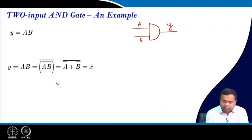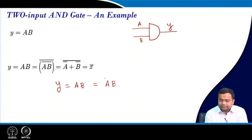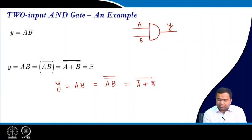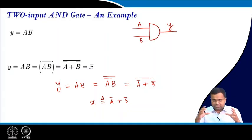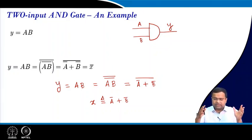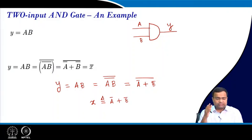In CMOS implementation, if we take Y equal to AB, then we can write AB as the complement: A-bar plus B-bar overall. We denote X to be A-bar plus B-bar. We want to implement in this way because almost all digital electronics nowadays are implemented using CMOS technology, which uses complementary MOS — that means PMOS and NMOS.